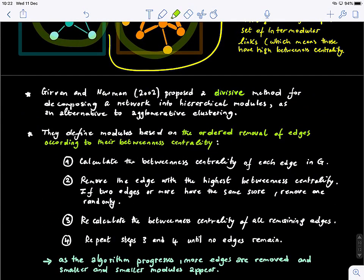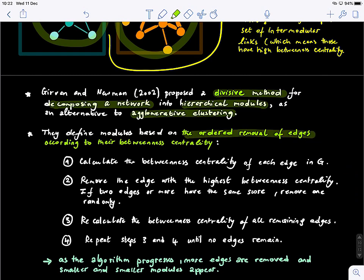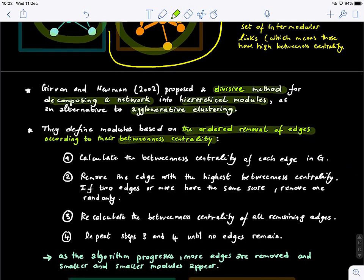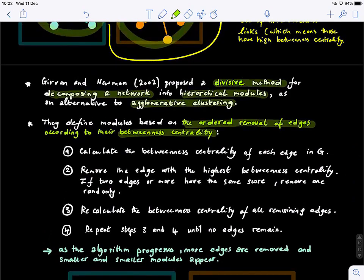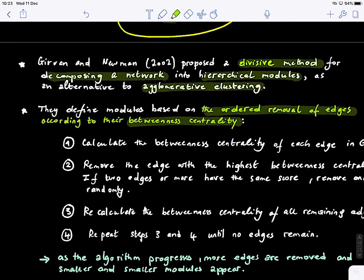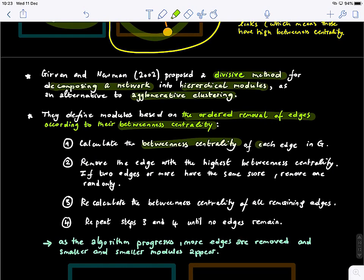So let's look at how the algorithm works. So this is actually a divisive method for decomposing a network into hierarchical modules as an alternative to agglomerative clustering. They define modules based on the ordered removal of edges according to their betweenness centrality. So in the first step, I'll read the steps and then we can apply it. We calculate the betweenness centrality of each edge.